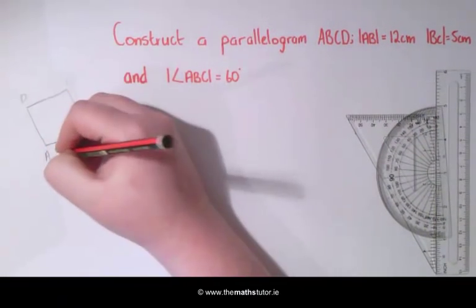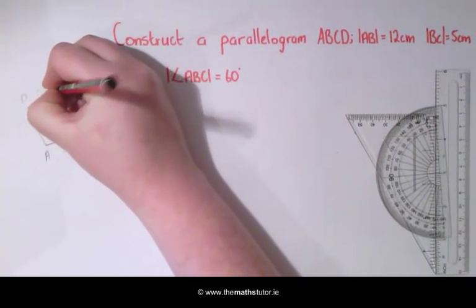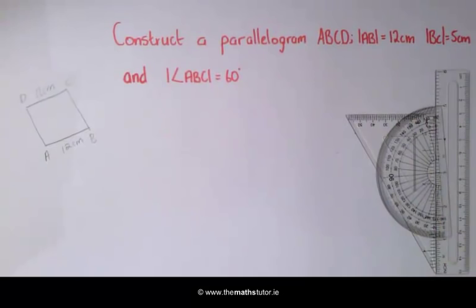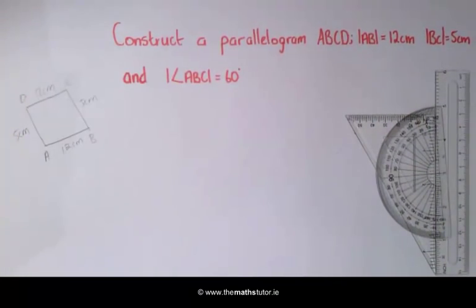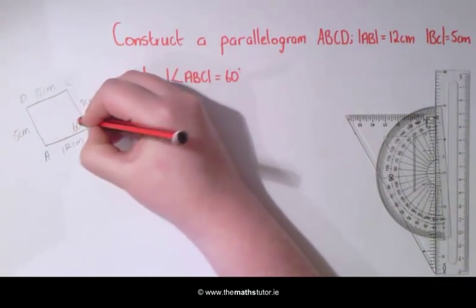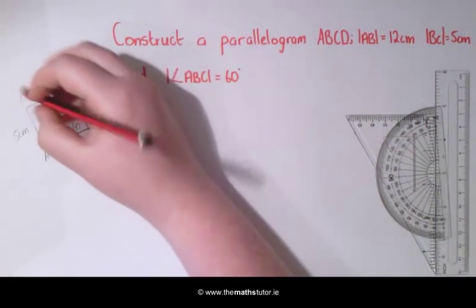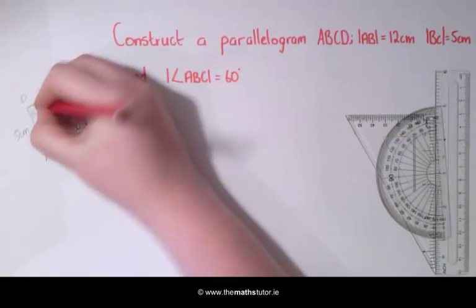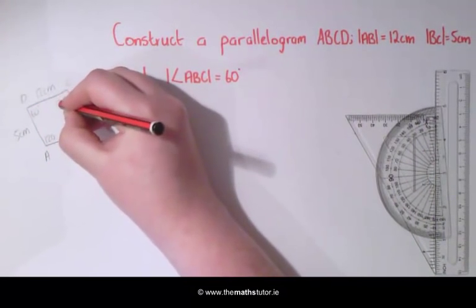We know AB is 12 cm so therefore DC is 12 cm. We know that BC is 5 cm so we know AD is 5 cm. And the angle ABC is 60 degrees. So therefore this angle here is 60 and the remaining angles are 120 and 120.